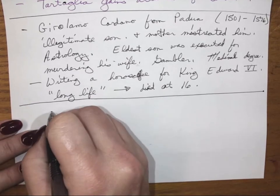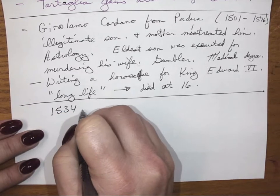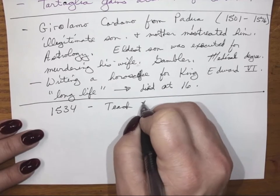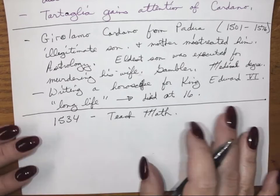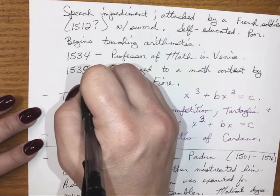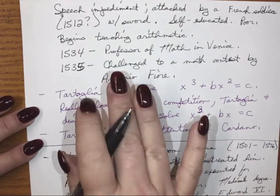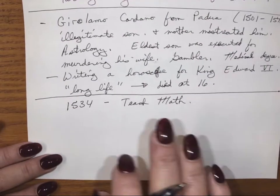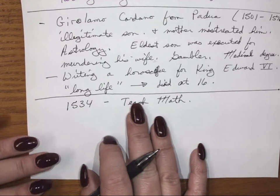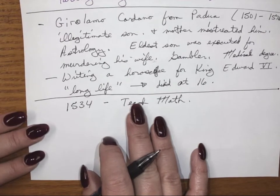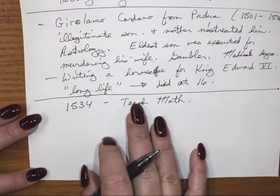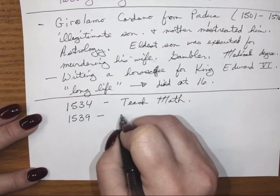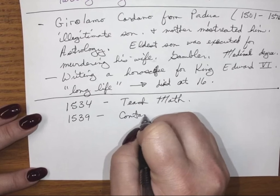Cardano mirrors Tartaglia pretty closely: in 1534 he begins to teach math, which is about the same time Tartaglia became a professor of math. And in 1539, after the competition, Cardano contacts Tartaglia.